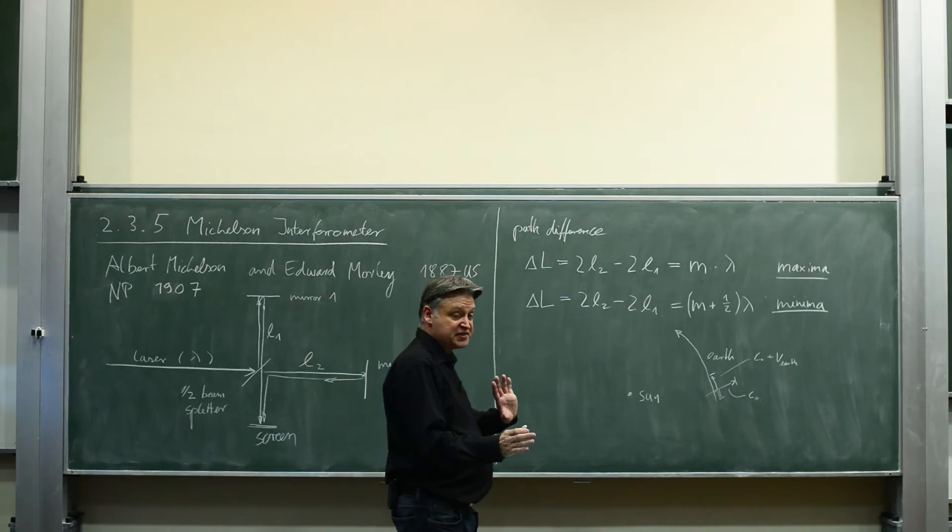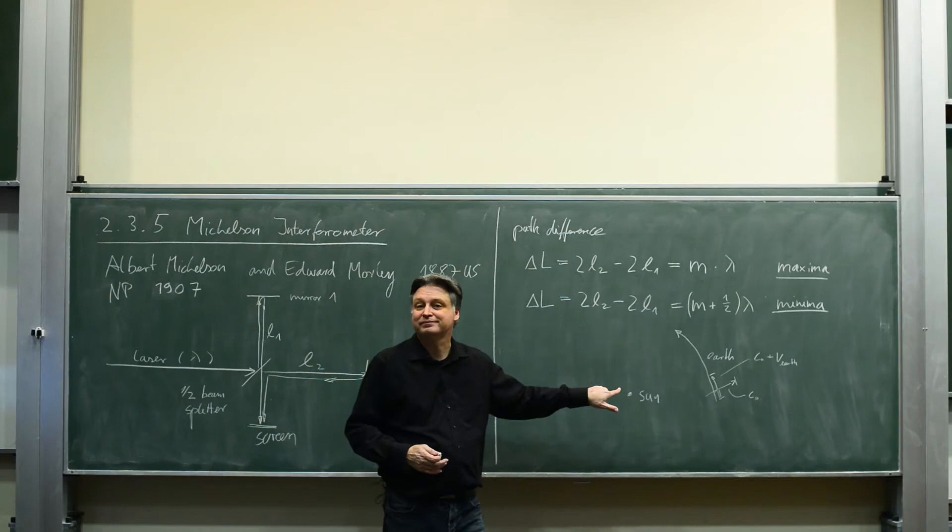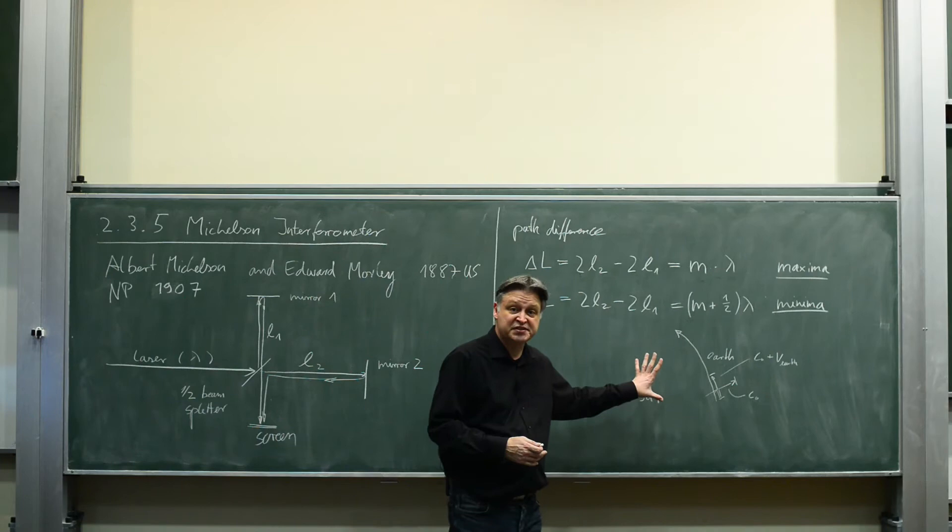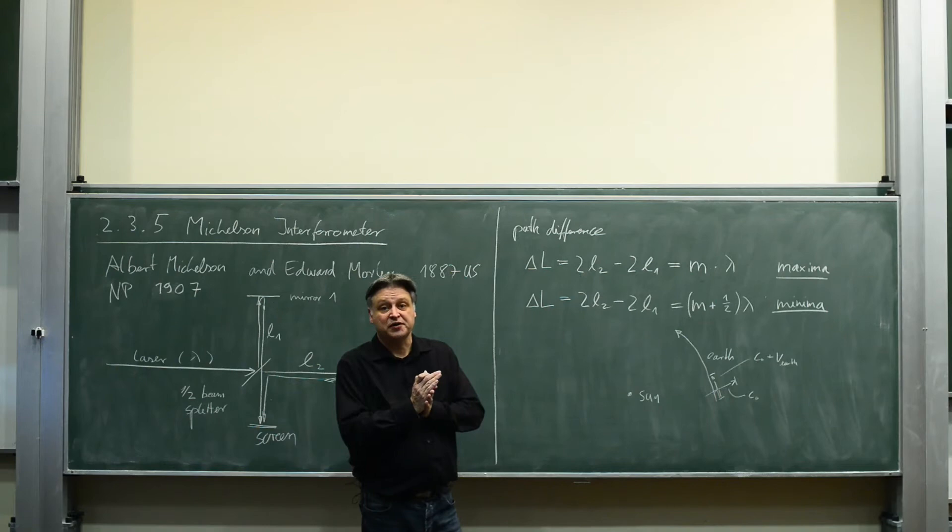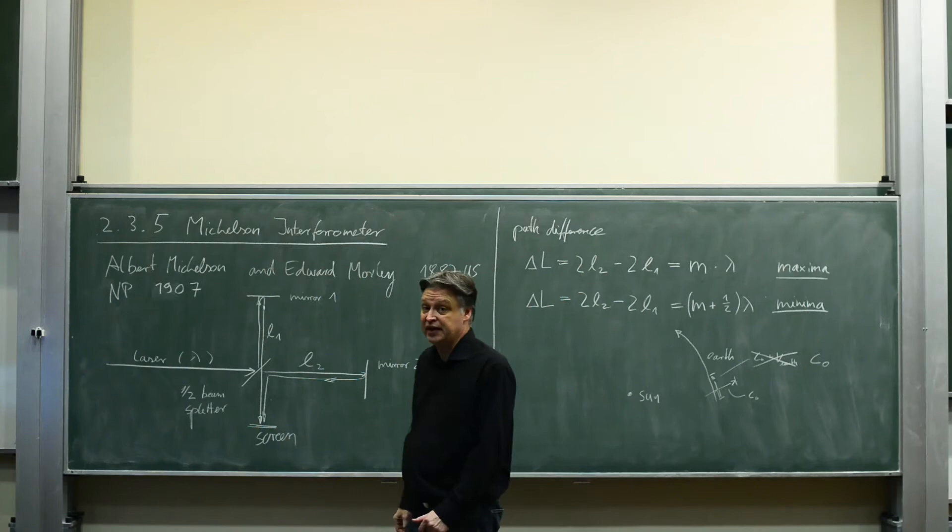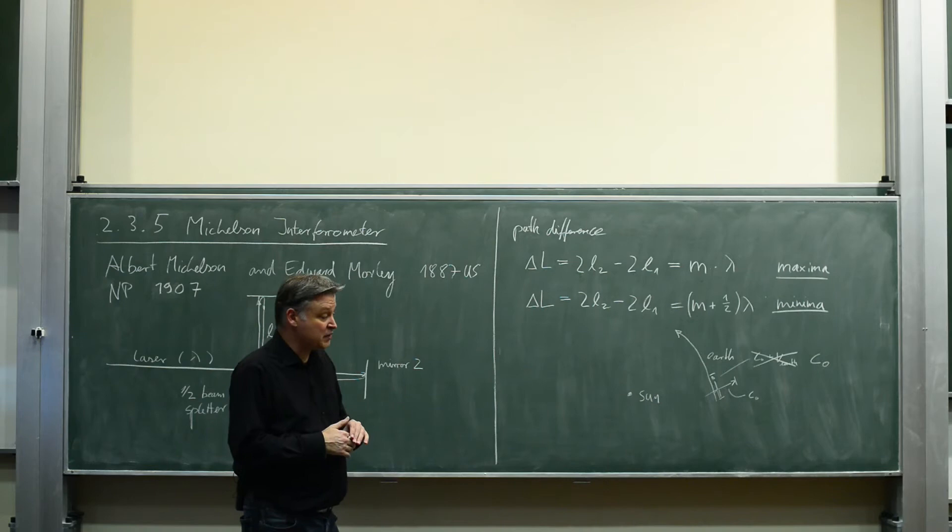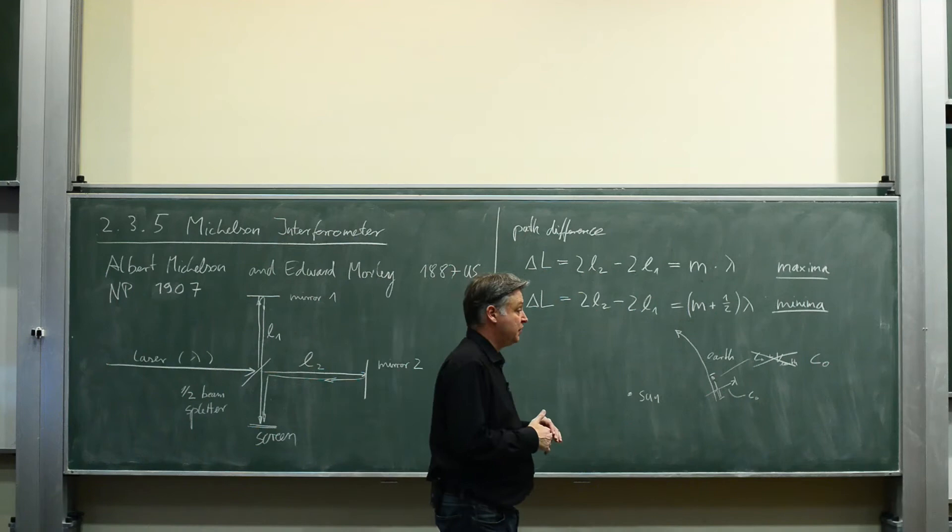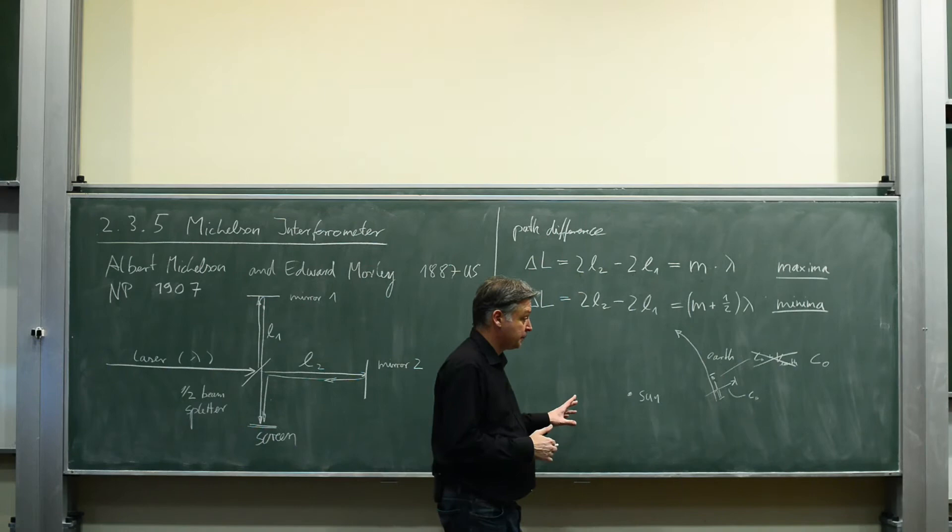Now they took the setup and rotated it by 90 degree. Now they swapped the two arms and nothing happened. Same interference pattern. And you can imagine that this is a super precise way of measuring distance changes. Nothing happened at all, which means for both arms the same speed of light. So that one can be eliminated. Also that arm experiences just the speed of light. That was a fundamental experiment. Very simple tabletop experiment and the fundamental proof that the speed of light is indeed the highest possible speed of the universe. And that discussion here was the starting point for Einstein's relativity theory. This is why this experiment is so important.